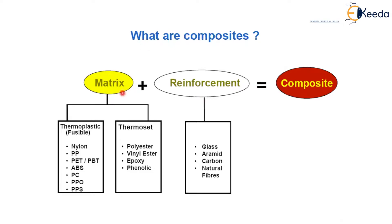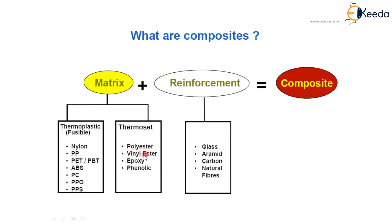Let me explain what is meant by a composite. A composite consists of two materials in general: one is the matrix, and the second material is added as a reinforcement. The matrix is the one having the maximum percentage, while the second material has a lesser percentage. Examples of matrix materials include thermoplastics and thermosets like polyester, vinylester, epoxy, and phenolic, as well as metals such as aluminium and copper.